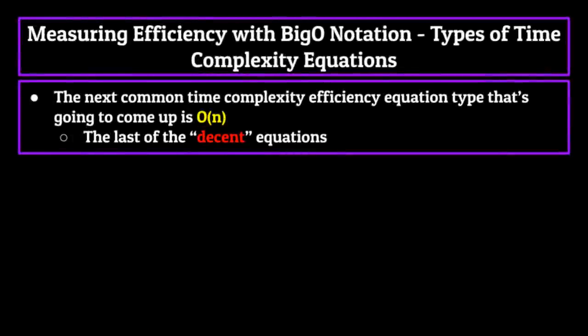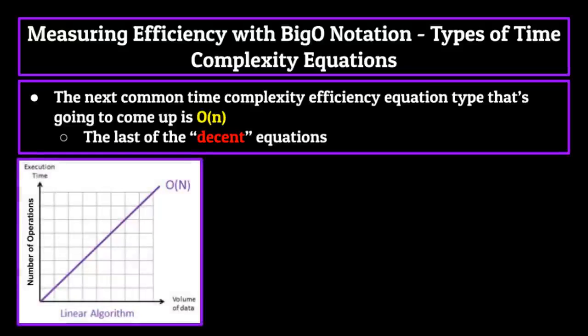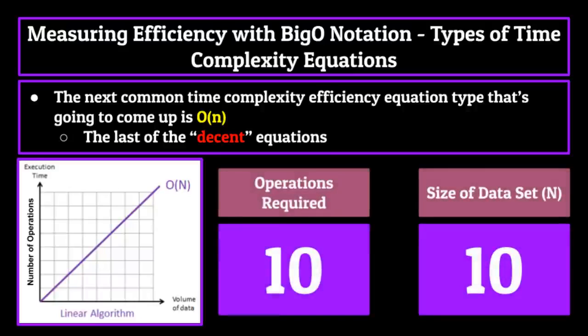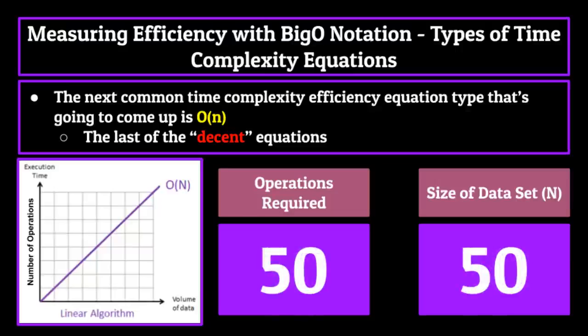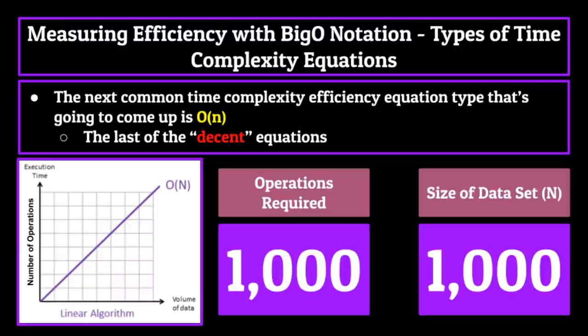O of n is the next common time complexity equation that's going to come up frequently during this lecture. The graph of volume of data versus instructions needed for this function is linear, meaning that for every element you add to the data set, the amount of instructions needed to complete that function will increase by the same amount. So to perform a function with a time complexity of O of n on a data set with 10 elements, it will take 10 instructions. 50 elements will take 50 instructions. 1000 elements, 1000 instructions, and so on. O of n is really the last good time complexity equation that exists. Anything above this is considered inefficient and not very practical when it comes to data structures in computer science.